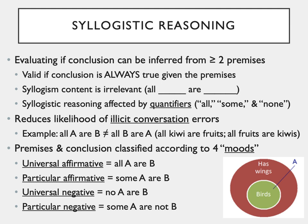A syllogism usually has two statements that are referred to as premises and a third statement called the conclusion. Syllogistic reasoning involves deciding whether a conclusion can be properly inferred from those statements. A syllogism is considered valid if the conclusion is always true given the premises. If there is any way in which it might not be true, it is invalid.